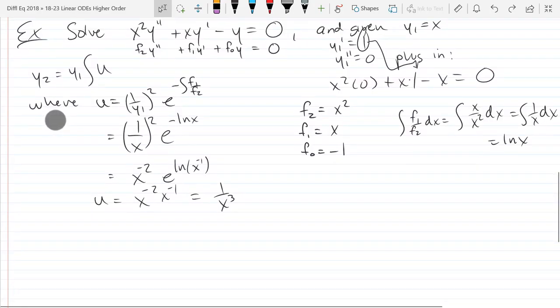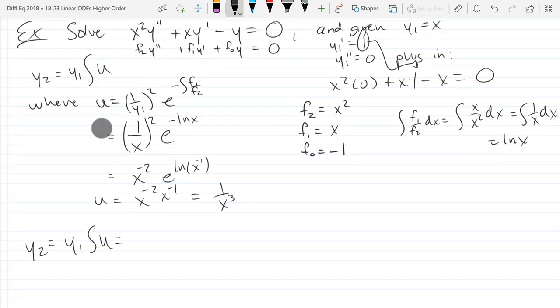That's u. Any questions on getting u? It's not complicated, but it is a lot of bookkeeping. We're ready to write down Y2 is Y1 integral u, and Y1 is x integral x to the negative 3 dx.